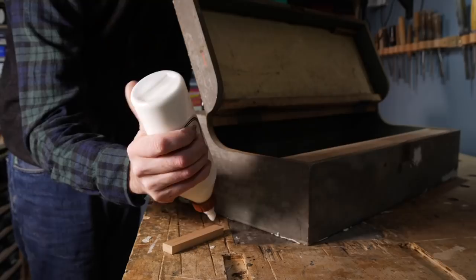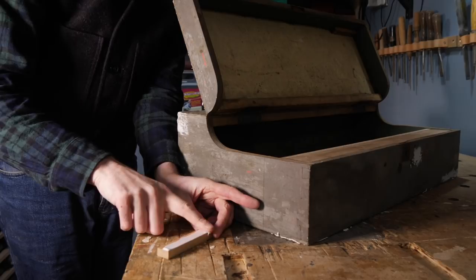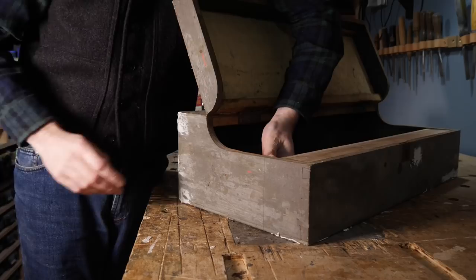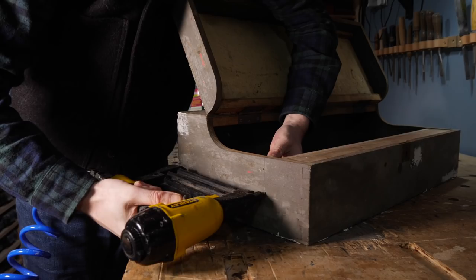I can then get some glue spread on these runners and put them in place. I want the drawer to be a few millimeters down from the top so it runs freely, so I use a few playing cards as spacers when I'm getting these in. When they're in position, I can then get the nail gun and fire some nails through that line I've drawn to hold them in place.